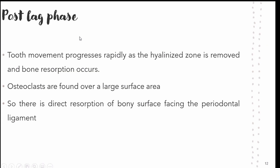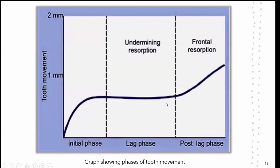In the post-lag phase, tooth movement progresses rapidly as the hyalinized zone is removed and bone resorption occurs. The osteoclasts are found over a larger surface area, so there is direct resorption of the bony surface facing the periodontal ligament. The graph depicting the phases of tooth movement shows rapid movement in the initial phase, no movement in the lag phase, and again an increment in tooth movement during the post-lag phase.